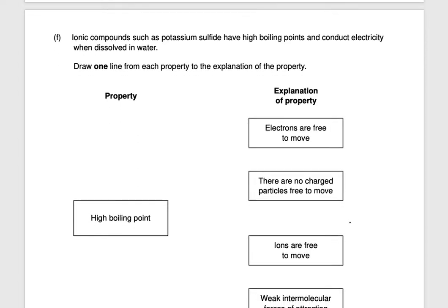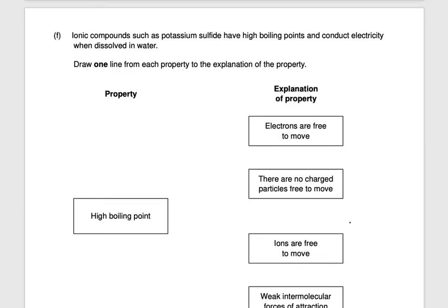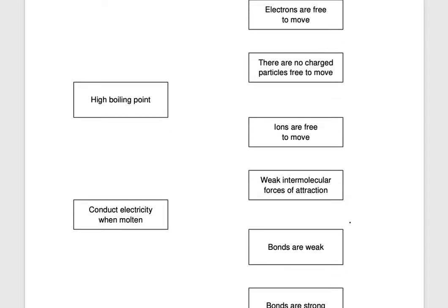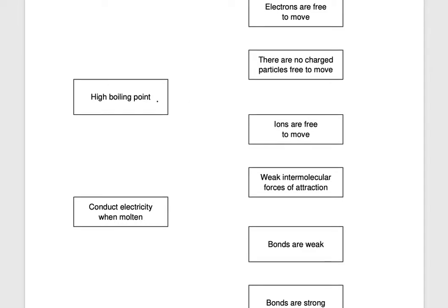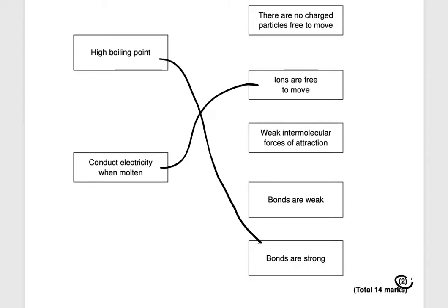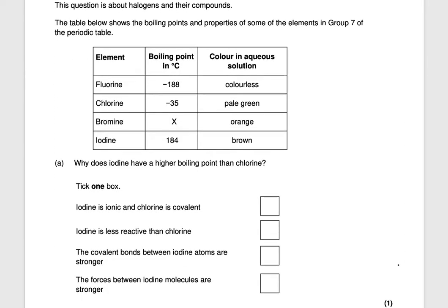Ionic compounds such as potassium sulfide have high boiling points and conduct electricity when dissolved in water. Draw one line from each property to its explanation. High boiling point means the bonds are strong — more energy is required to break them, resulting in a high boiling point. Conducts electricity when molten means the ions (not electrons) are free to move and carry a charge. That would get you two marks.